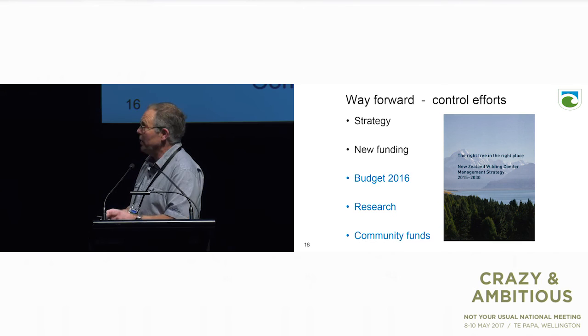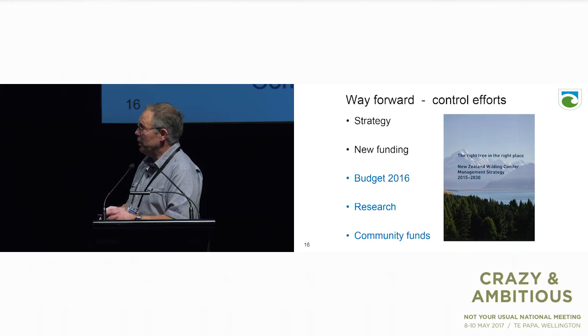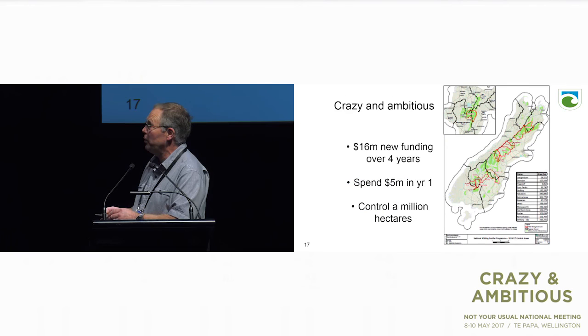The way forward—what are we doing about it? We have a strategy finished in 2015, a recipe for New Zealand to deal with the wilding conifer problem. We also needed new funding. In Budget 2016 we got an extra $16 million over four years, additional research money, and money into community conservation funding for wilding conifer work.